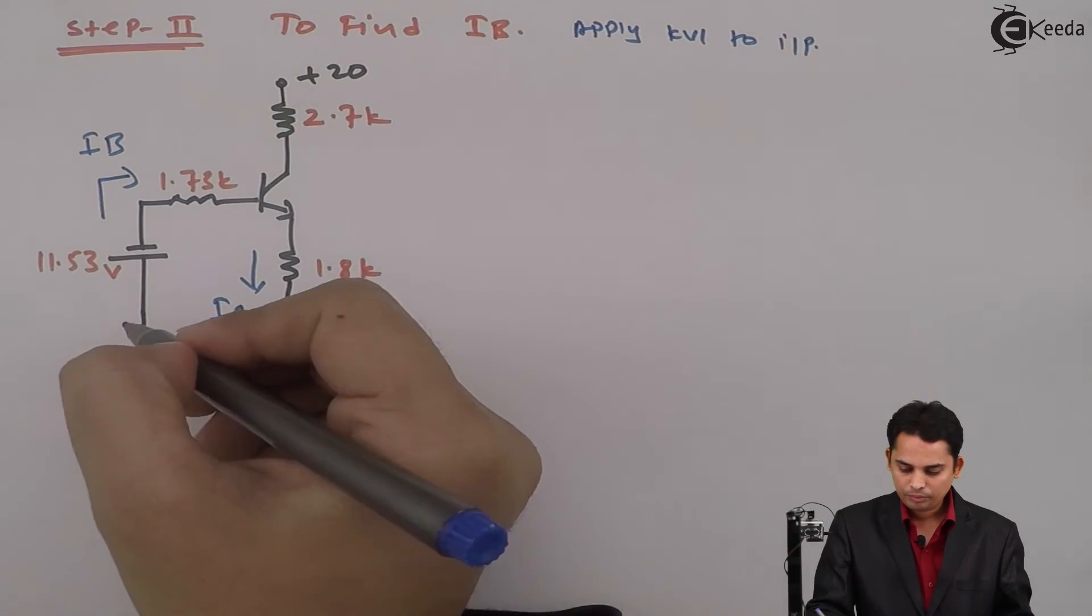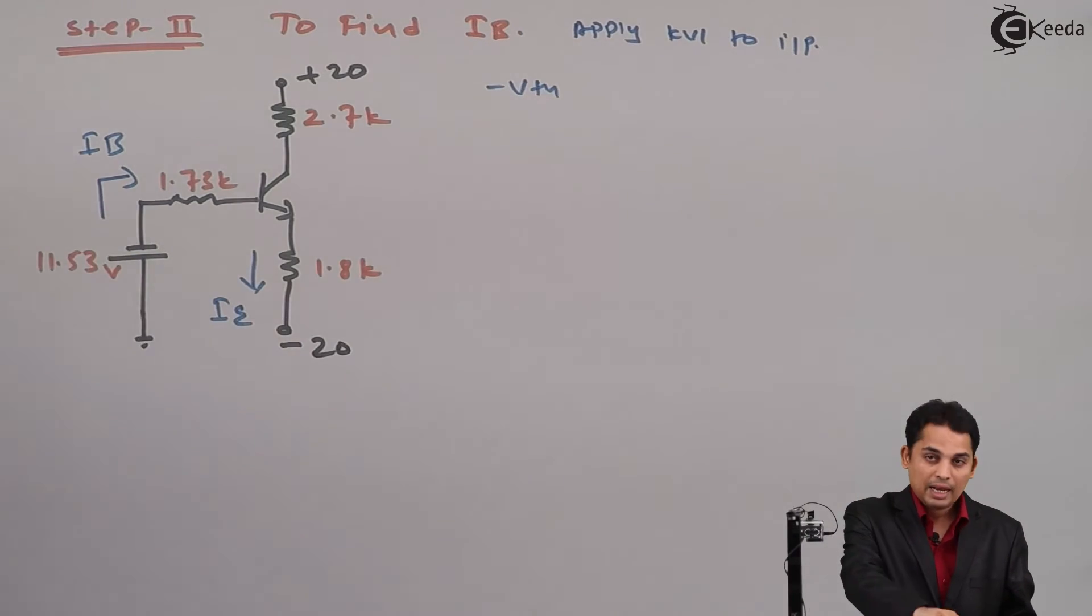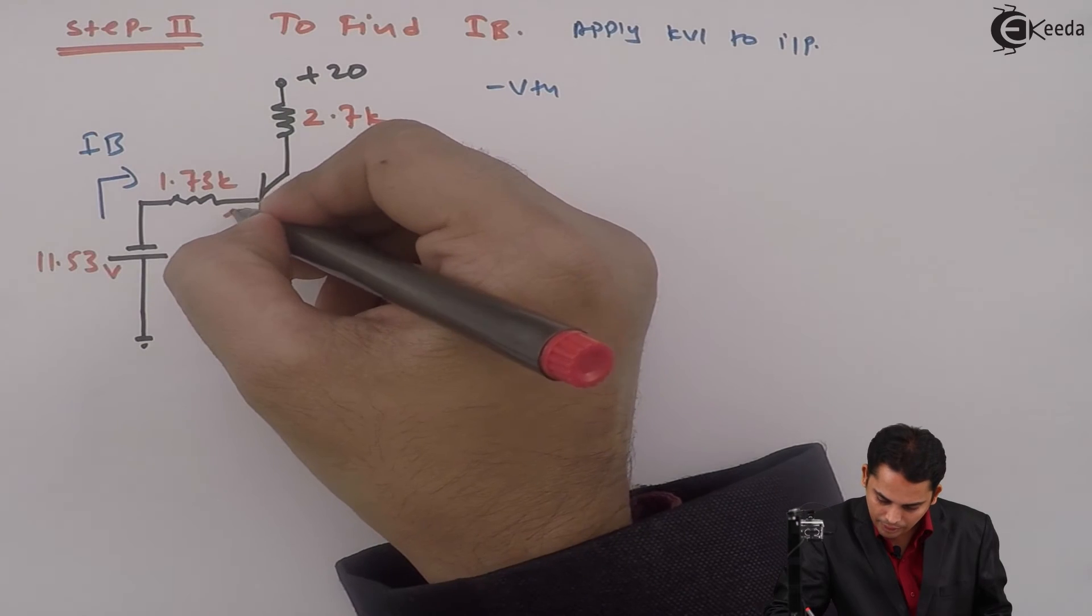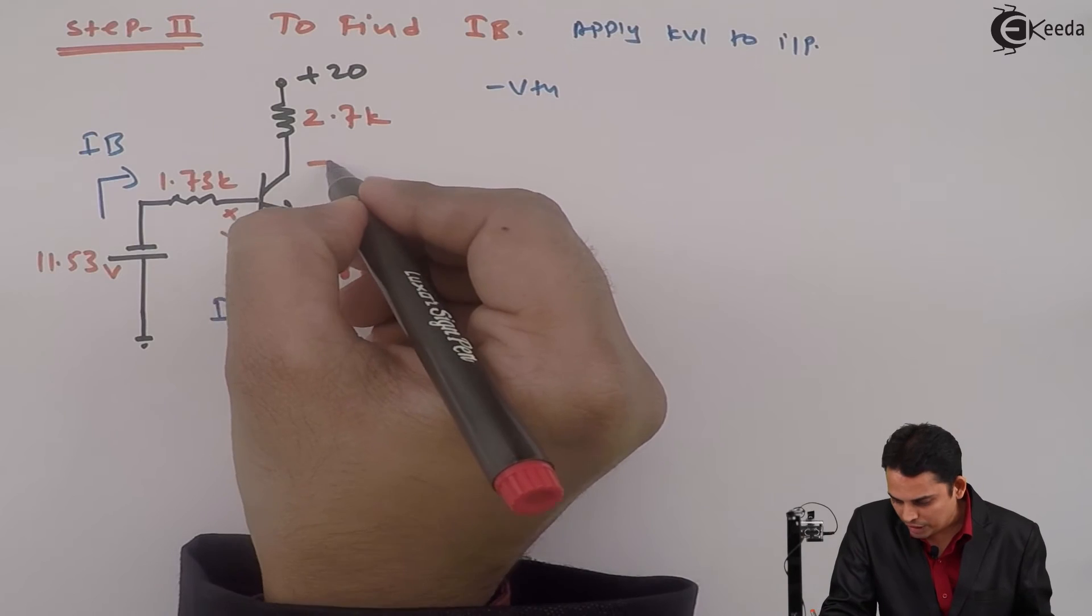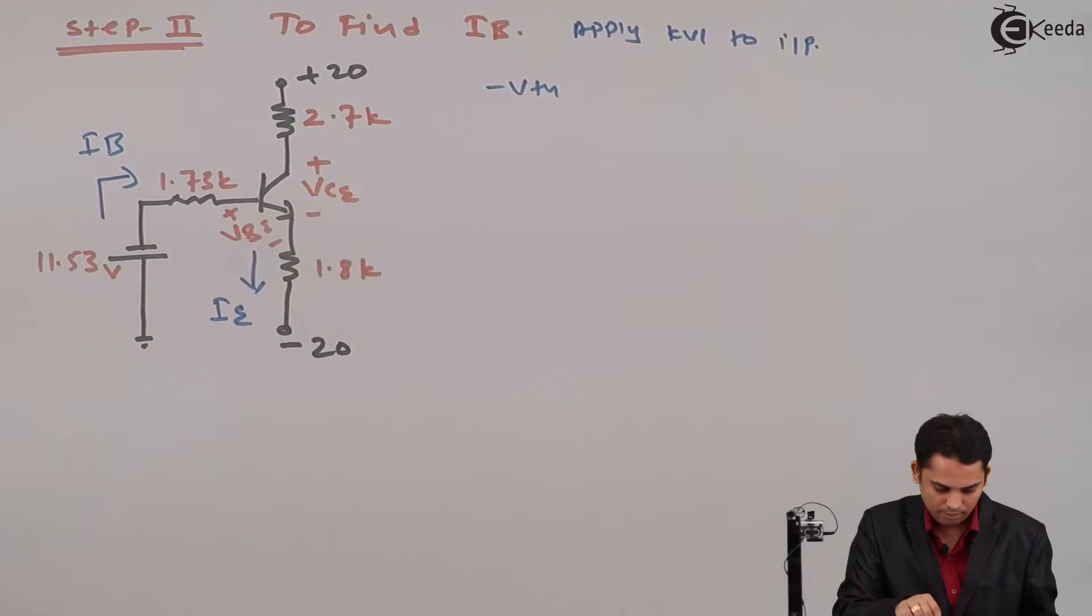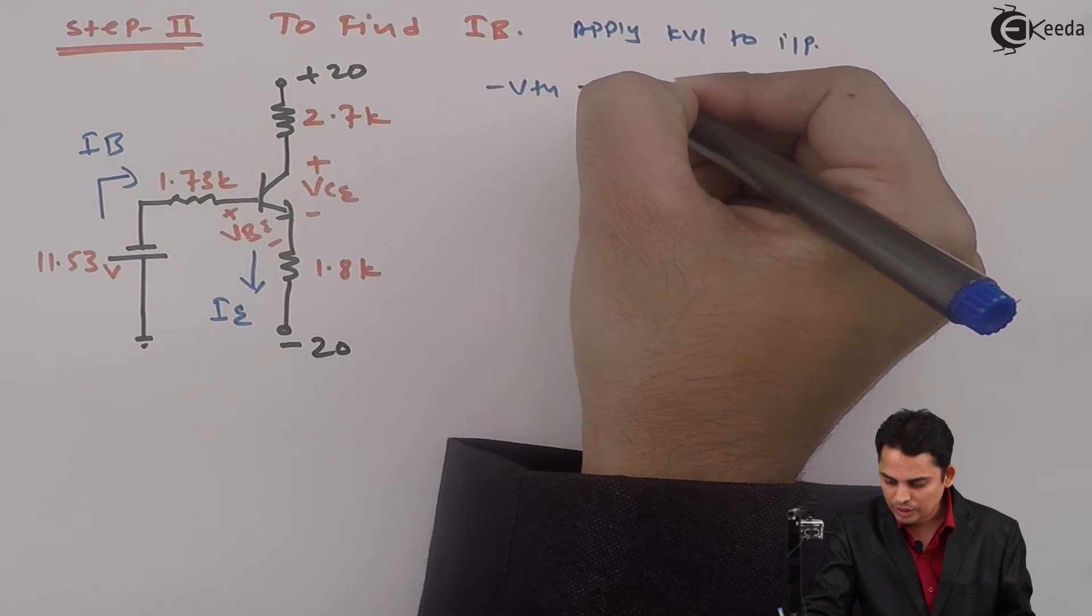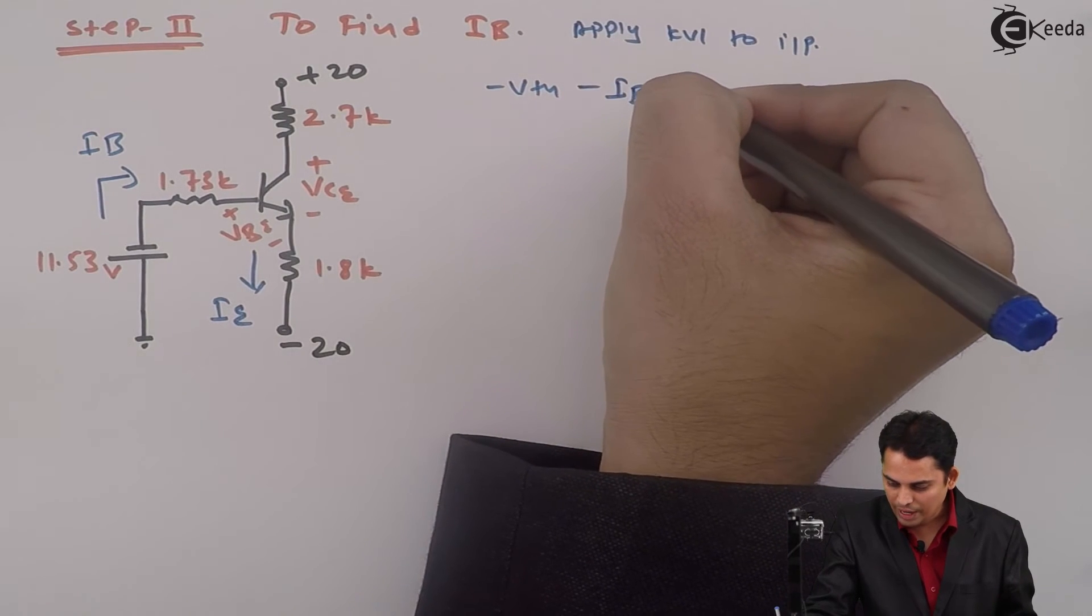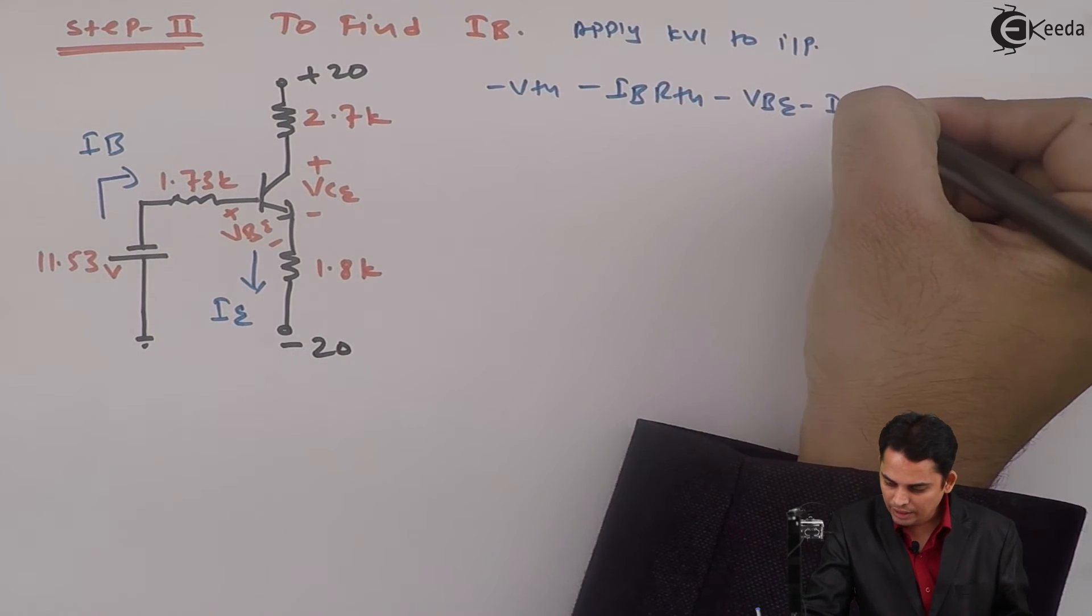Equation will become minus Vth. Before that I can again define voltage between this as Vbe whereas voltage between this as Vce. Now the equation will become minus Vth minus IB into Rth minus Vbe minus IE into RE is equal to zero.